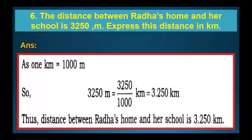The distance between Radha's home and her school is 3250 meters. Express this distance in kilometers. As we know, 1 kilometer equals 1000 meters, so 3250 meters divided by 1000 gives us 3.250 kilometers. So the distance between Radha's home and her school is 3.250 kilometers.